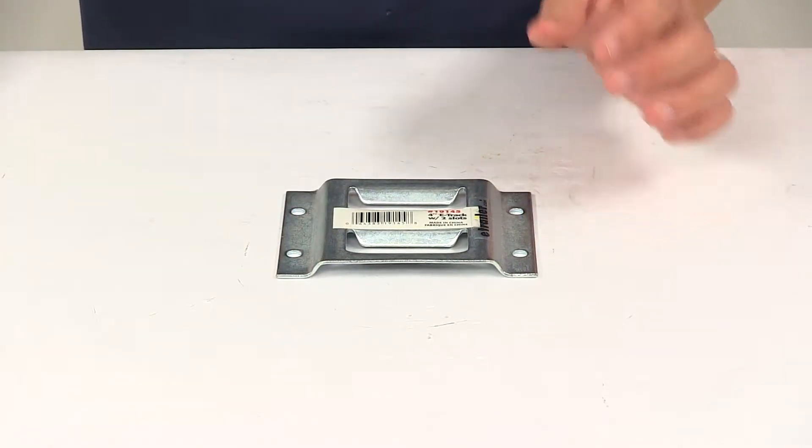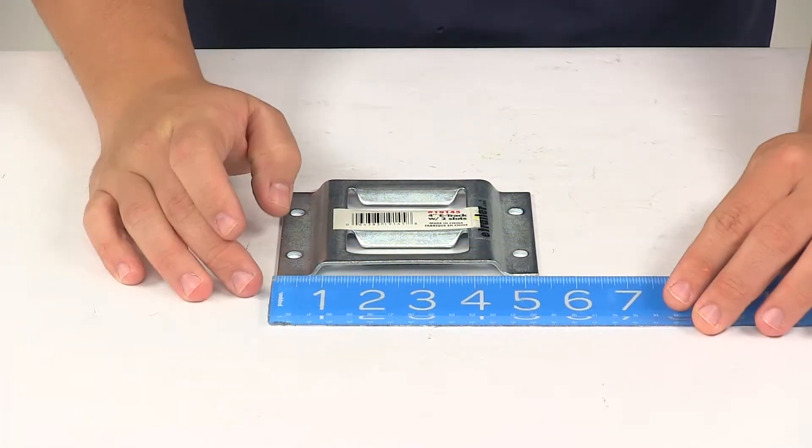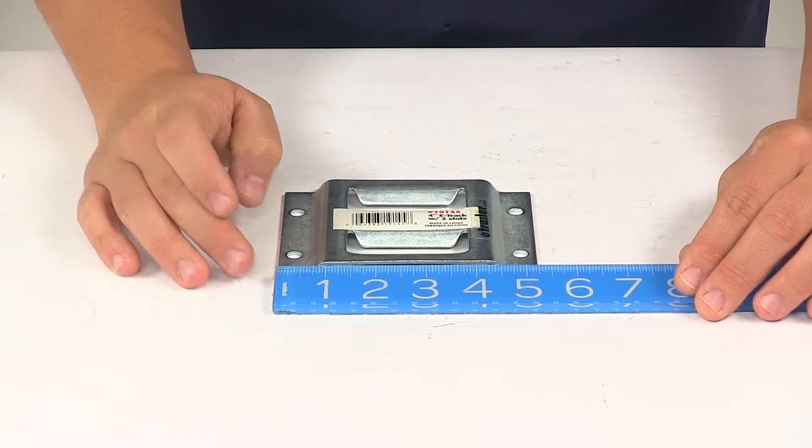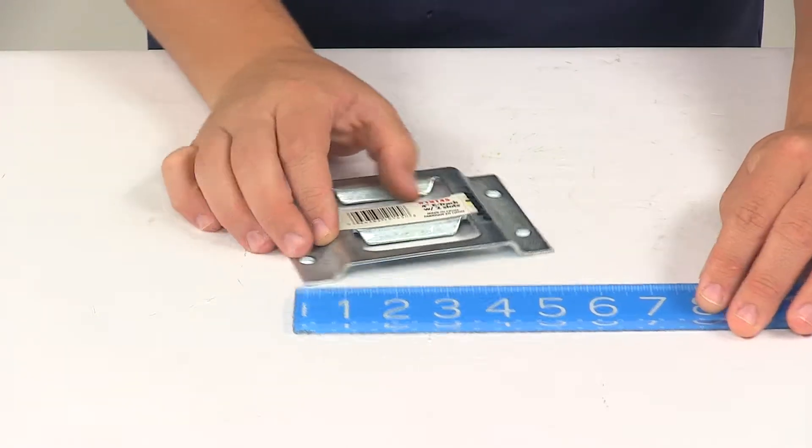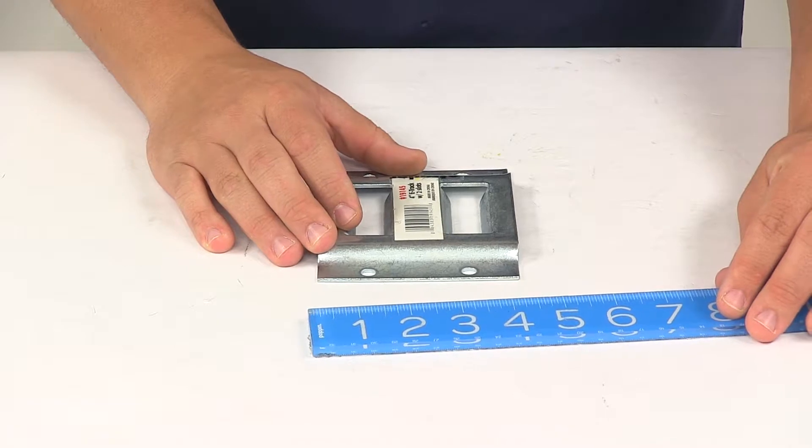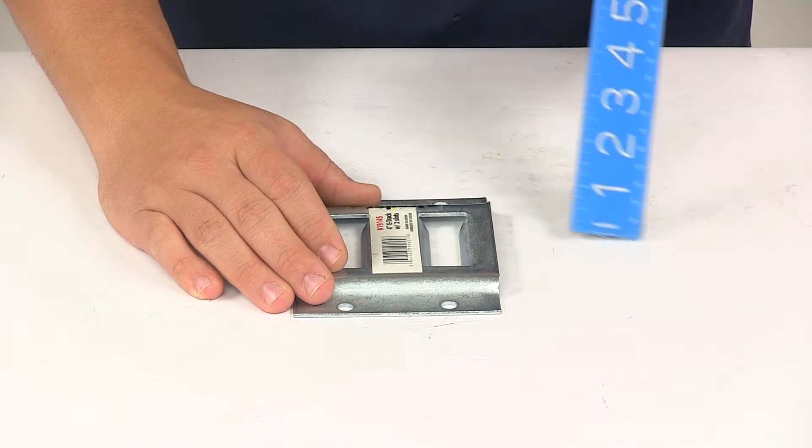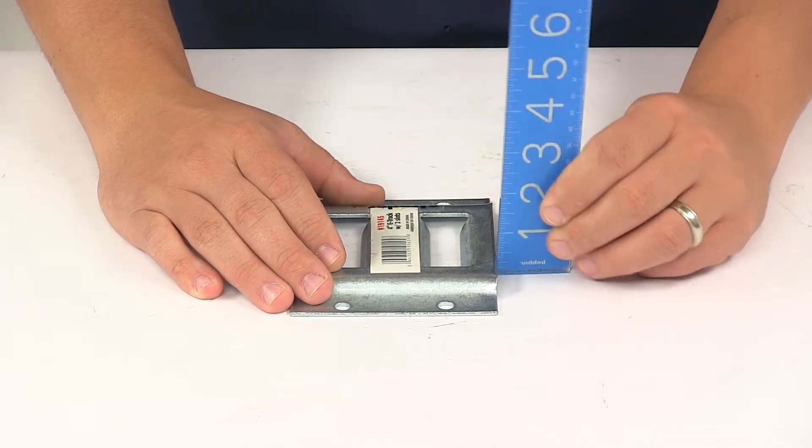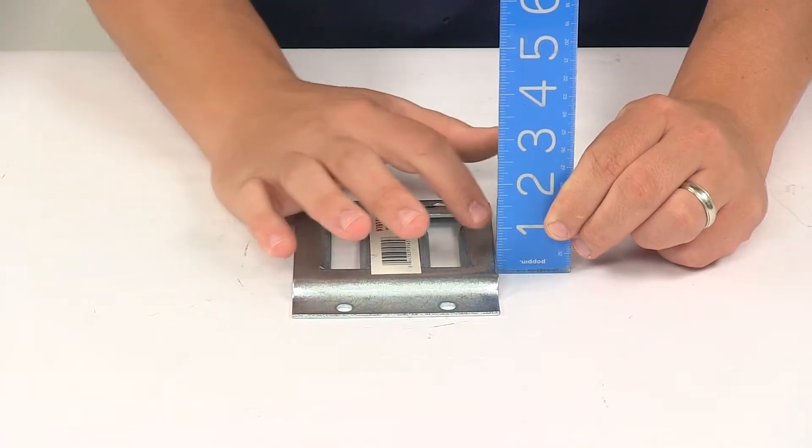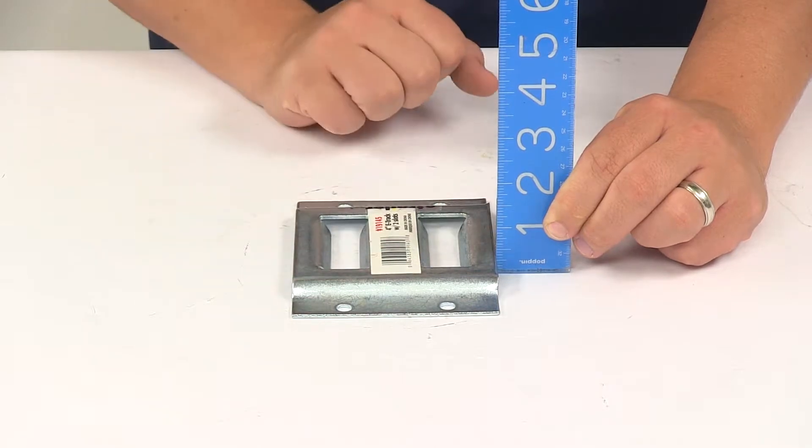So edge-to-edge this direction, that's going to give us a measurement of five and one-quarter inches. Going this direction, that's going to measure four inches, and then when it comes to the height, just below a half inch. So it actually measures seven sixteenths of an inch tall.